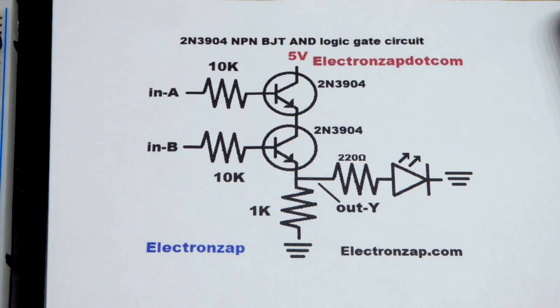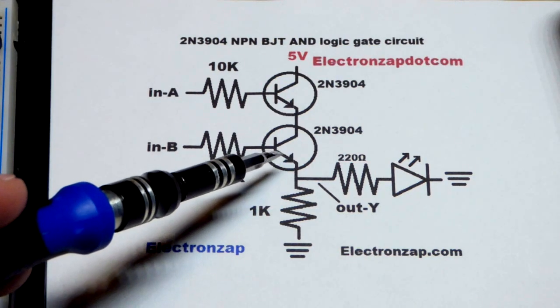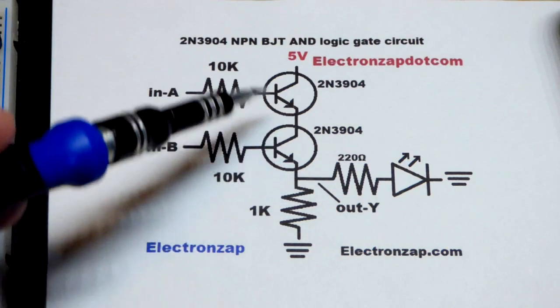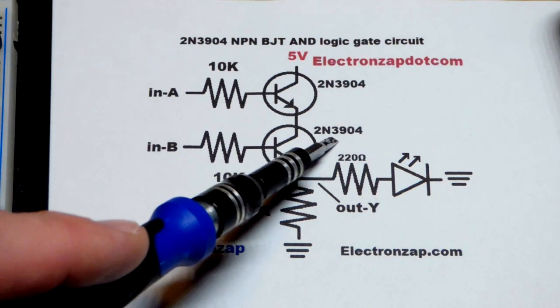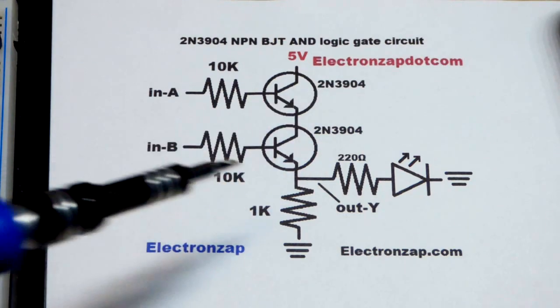We're going to use the 2N3904. Any NPN bipolar junction transistor should work just fine for this particular circuit, but the pin layout may be different. If it starts with 2N, though, and it's a bipolar junction transistor, it's probably the same pin layout.